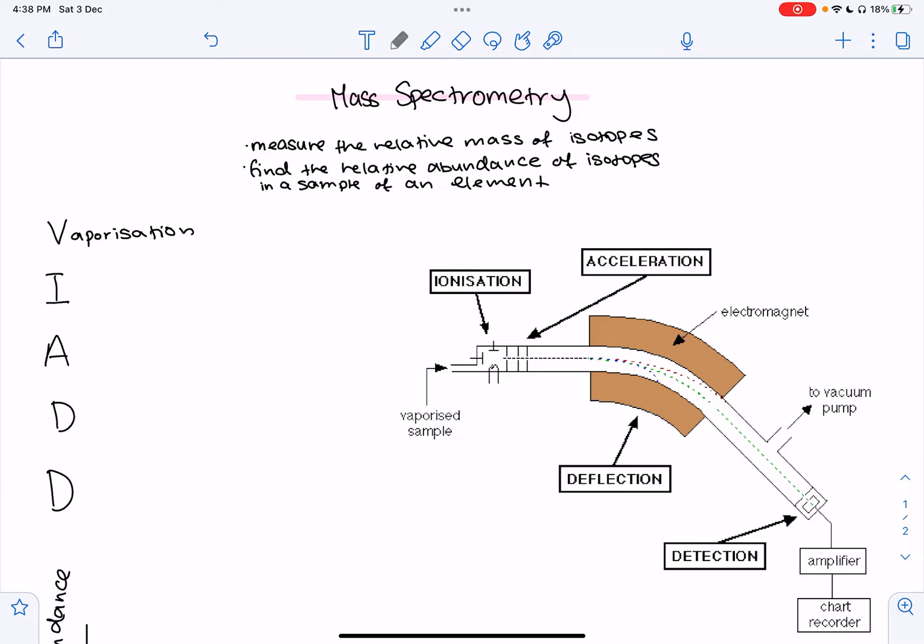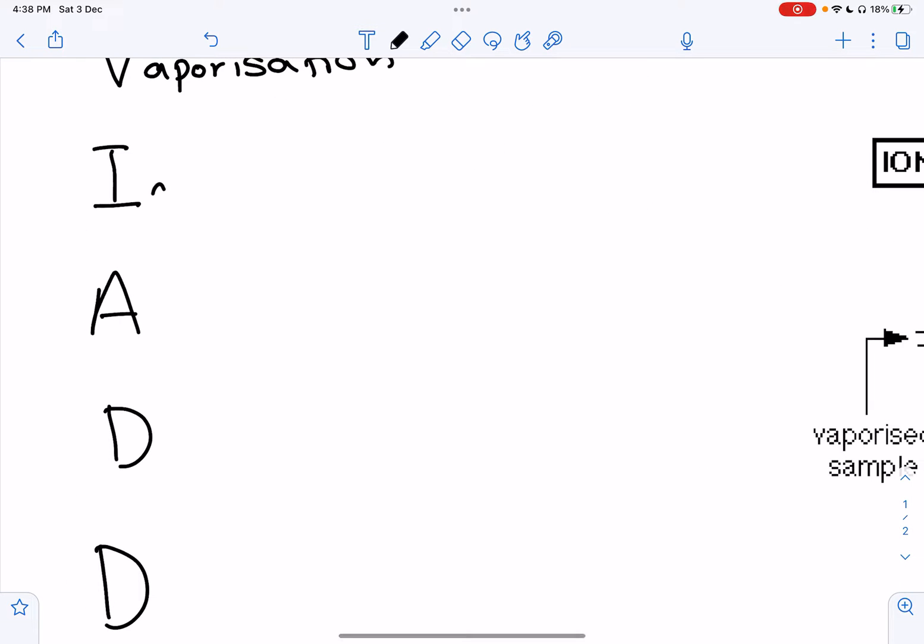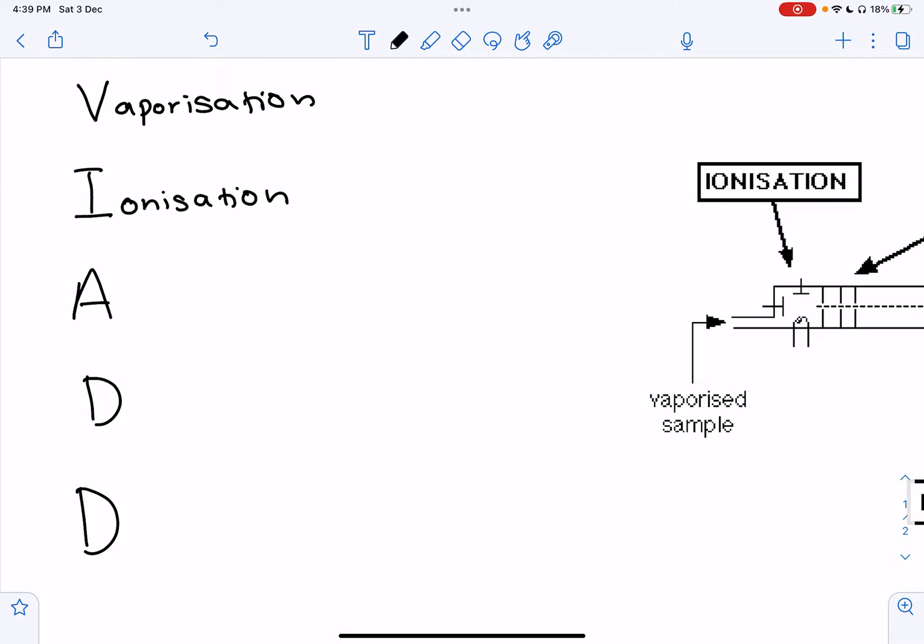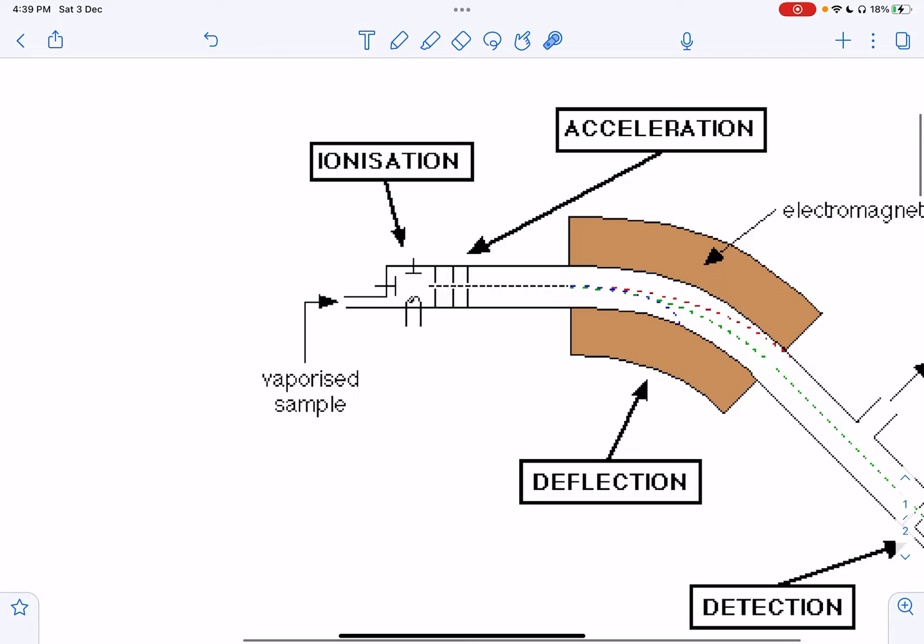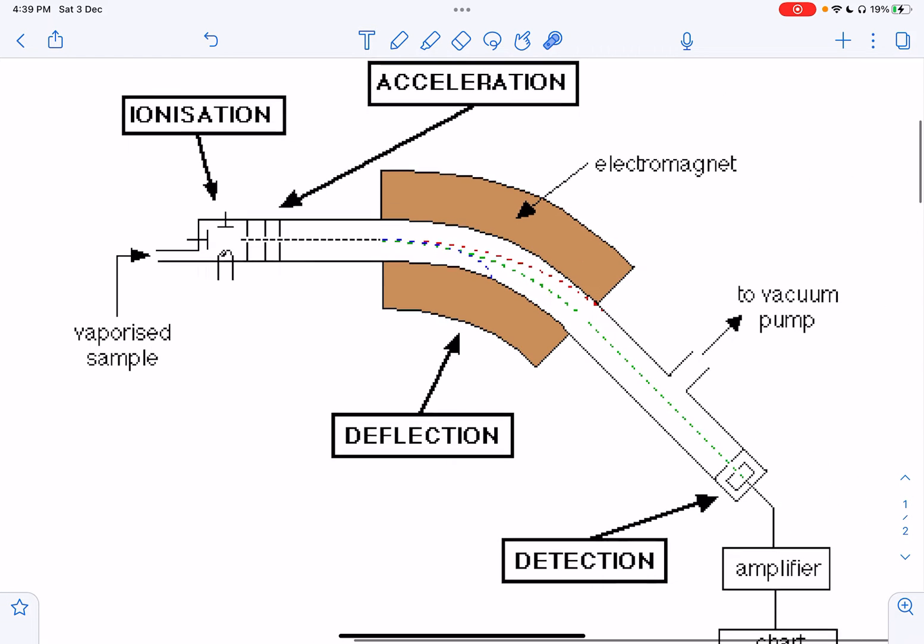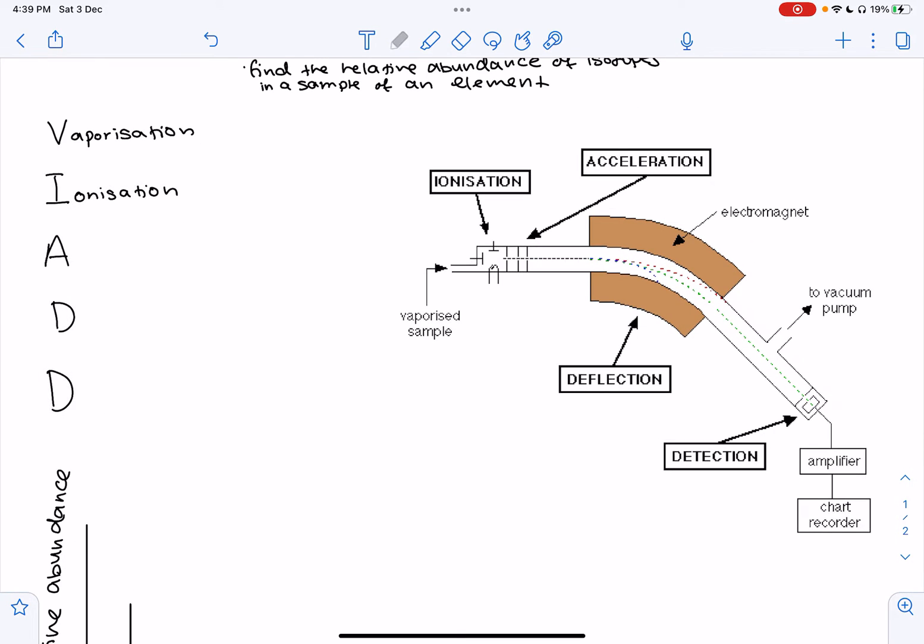The next step is ionization. This is a key step because the sample is bombarded by a stream of electrons emitted by an electrically heated metal coil. The sample is ionized by knocking off one or more electrons to give off positive ions. The atoms are turned into ions and a positive charge is formed. The resulting positive ions then pass through holes in parallel plates under the influence of an electric field where they are accelerated. That's the third step.